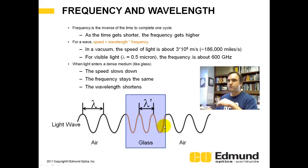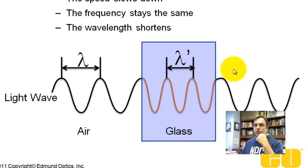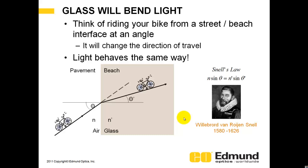So frequency is the inverse of the time to complete one cycle. So as time gets shorter, the frequency gets higher. For a wave, for a photon, the speed is proportional to the wavelength times the frequency. So in a vacuum, a photon is going to travel at about 3 times 10 to the 8 meters per second. For visible light then, its frequency is 600 gigahertz. When light enters glass, the speed is going to slow down. The frequency stays the same, so the wavelength has to shorten. And that's shown here. You have a light beam coming in with a certain wavelength. It's going to hit the glass here, and you can see the wavelength is going to actually get shorter, and then continue the same original wavelength when it comes out into air again.